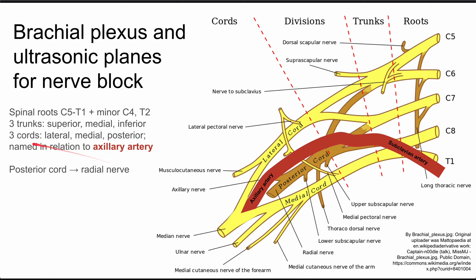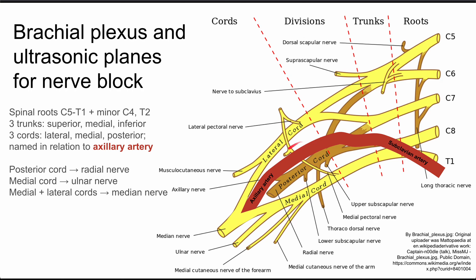The three cords then turn into the nerves we recognize in the wrist and hand. The posterior cord becomes the radial nerve. The ulnar nerve comes out of the medial cord. The median nerve is a little tricky — it comes out of both the medial and the lateral cords, which come together to form it. So those are the three big nerves that innervate the forearm, the hand, and the wrist.